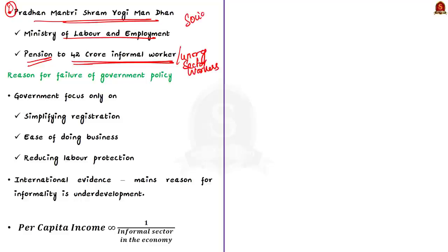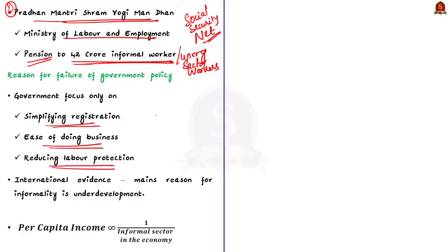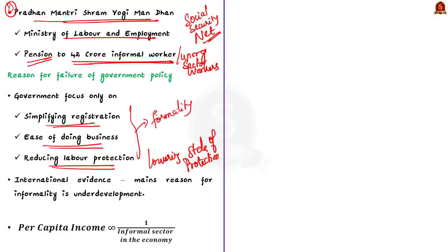These are some of the steps taken by the government to increase formalization of the economy. Despite these steps, formalization of the Indian economy is still low. The editorial mainly deals with the issue of government policies in formalizing the economy. The government believes that simplifying registration process, easing rules for business conduct, and lowering the standards of protection of formal sector workers will bring informal enterprises and their workers into the fold of formality. But international evidence suggests that the persistence of informality is, in fact, a sign of underdevelopment. There is an inverse relationship between informality and per capita income — as per capita income increases, informality in the economy decreases.